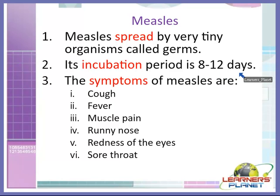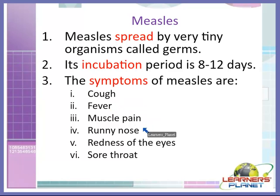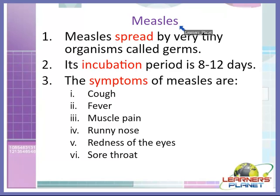The symptoms of measles, which appear after 8 to 12 days, are: cough, fever, muscle pain, runny nose, redness of the eyes, and sore throat. Sore throat means your throat becomes dry and you are not able to swallow food properly.